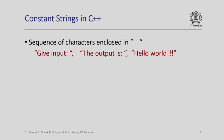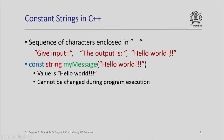We can also have constant strings in C++. These are usually sequences of characters enclosed in double quotes, such as 'Give input: ', 'The output is: ', or 'Hello World!'. You can also declare const string my_message = "Hello World", which defines a constant string whose value cannot be changed during program execution.